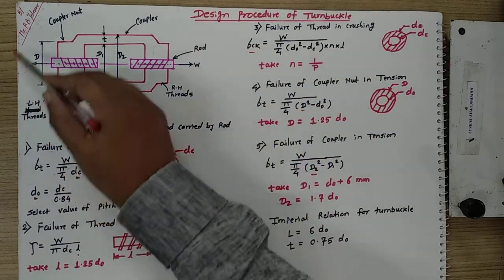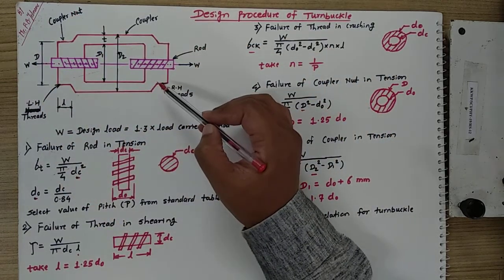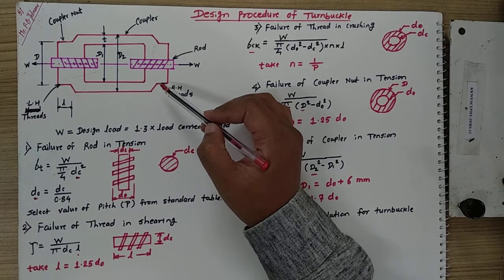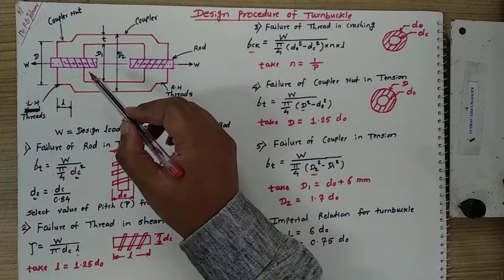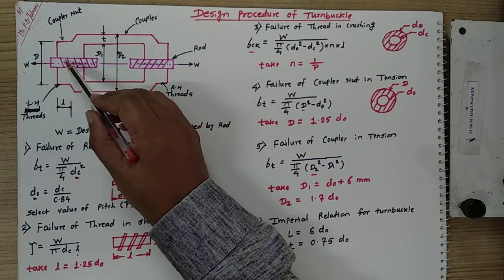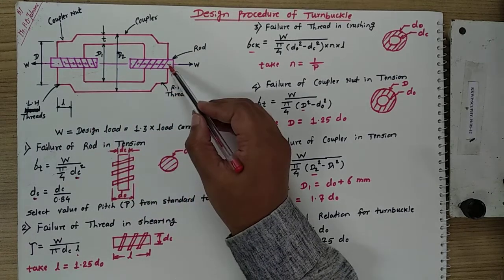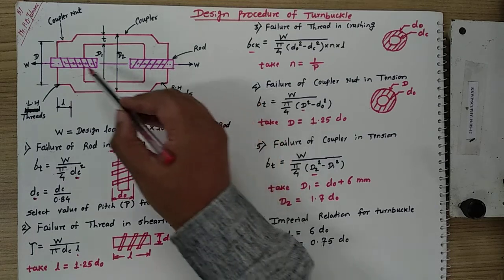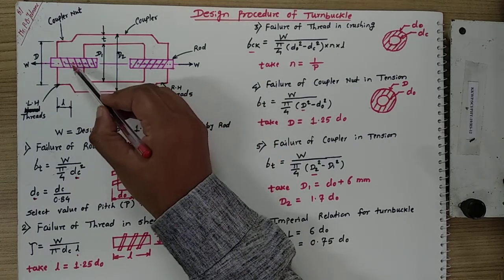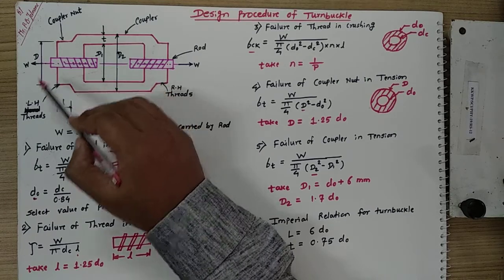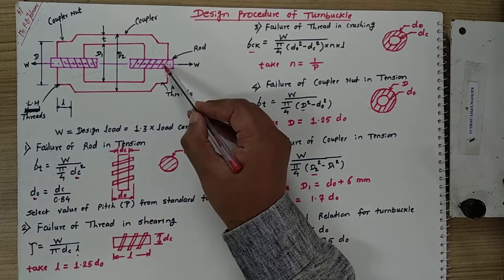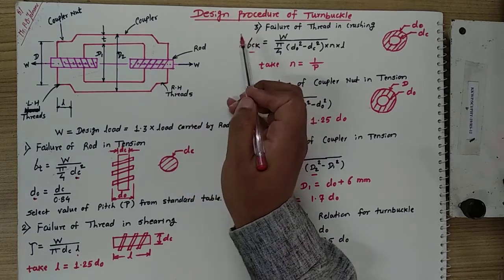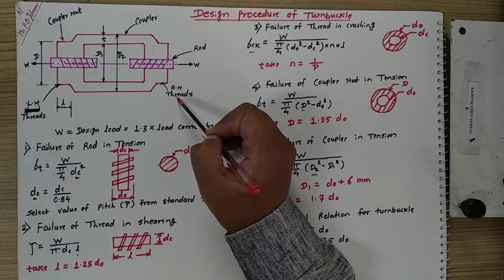These are the diagrams of a turnbuckle. A turnbuckle is basically used for maintaining the tension of a ropeway or maintaining the tension in a pole mounting. A turnbuckle consists of a left hand threaded rod and a right hand threaded rod. The threaded portion inclined towards the left is called the left hand thread rod, and the threaded portion towards the right is called the right hand threaded rod.